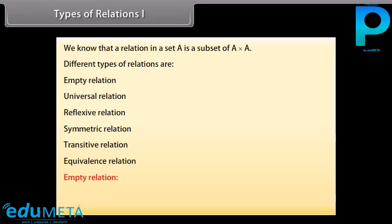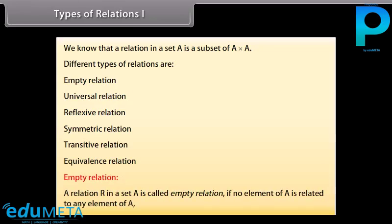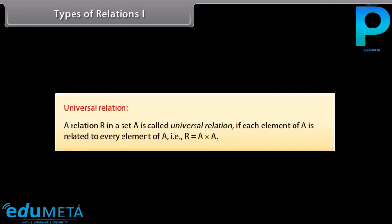Empty relation: A relation R in a set A is called empty relation if no element of A is related to any element of A. That is, R is a subset of A cross A (the empty subset). Universal relation: A relation R in a set A is called universal relation if each element of A is related to every element of A. That is, R is equal to A cross A.